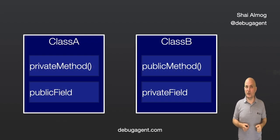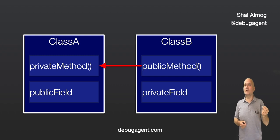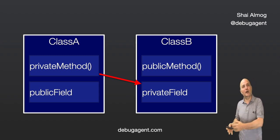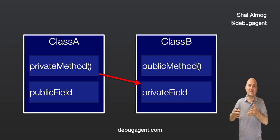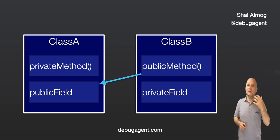Let's say we have these two classes. The private method in class A can invoke the public method in class B — no problem. The inverse won't work though: a public method in class B can't invoke a private method in another class. This is prohibited and won't compile. The private method in class A can't access the private field in class B either. Notice that the methods within class B can access the private field without a problem since it's in the same class. But since the field in class A is public, it can be accessed by any method, even outside of the class. This is the essence of encapsulation.